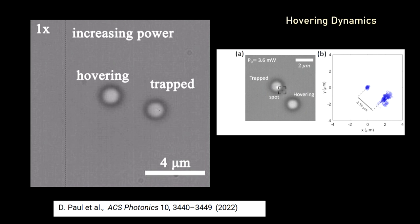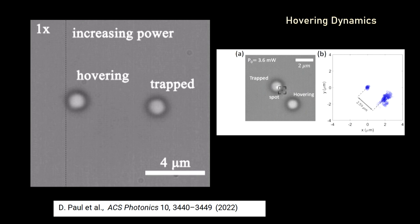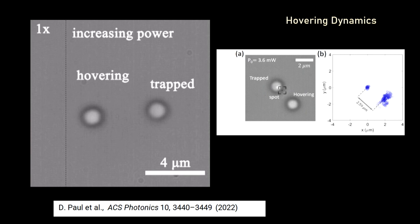You can also create hovering geometries, where you trap one particle and hover another particle nearby. This occurs purely because of the fact that this is a hot Brownian colloid — a light-absorbing particle — and you can study the Brownian dynamics of this configuration in significant detail.